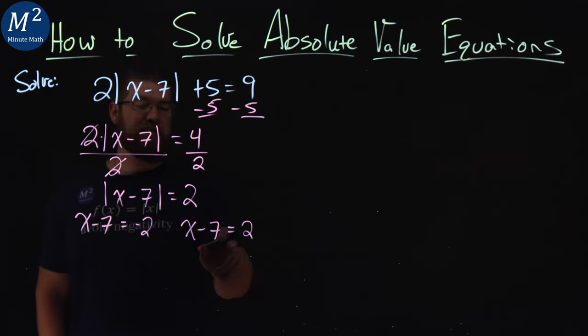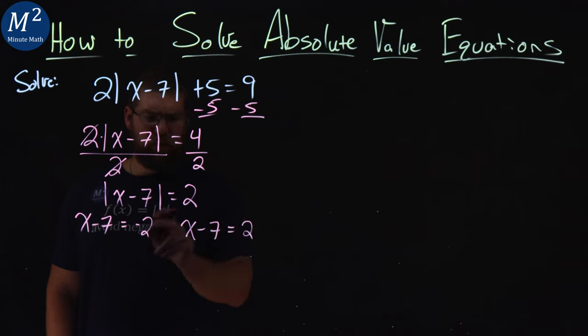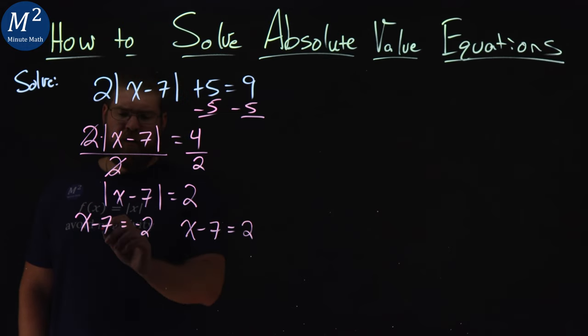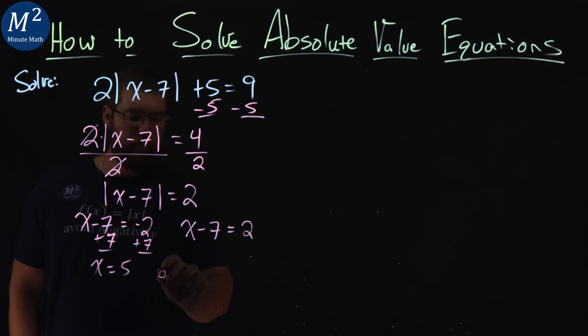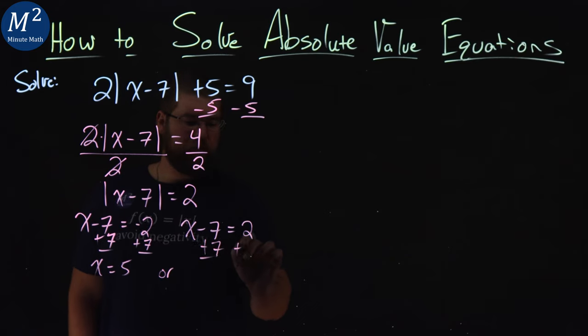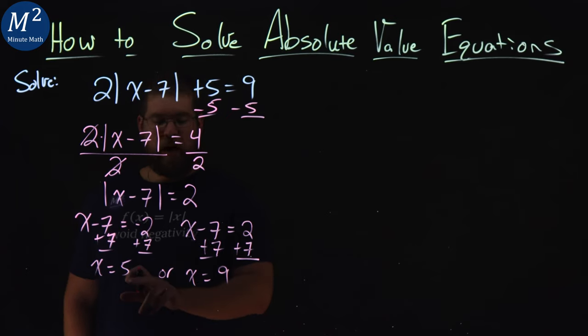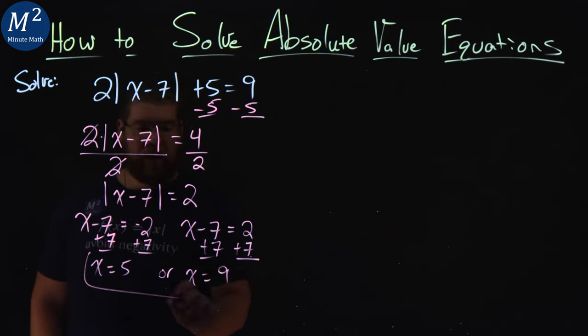So now I have to solve this equation twice, with negative 2 and positive 2. So I add 7 to both sides, not too bad. And I have x is equal to positive 5. Or we add 7 again to both sides, and x is equal to positive 9. So we have 5 or 9 as our two answers here.